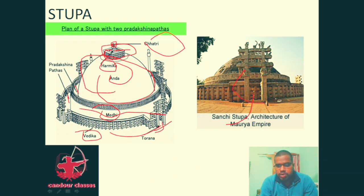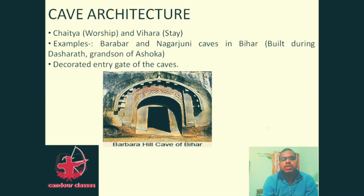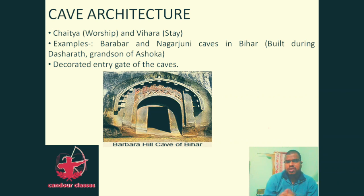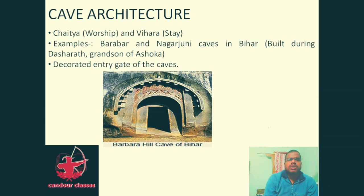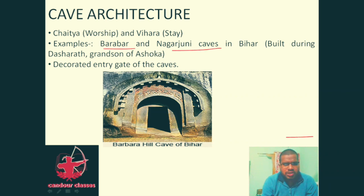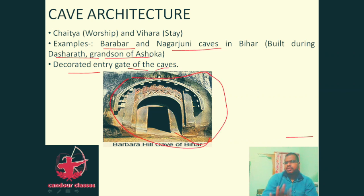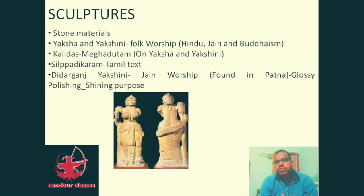Cave architecture served two purposes: chaityas for worship and viharas for staying — as travelers needed places to rest and pray. Examples include the Barabar and Nagarjuni caves in Bihar, built during the reign of Dasaratha, who was the grandson of Ashoka. The interiors of these caves are intricately decorated.